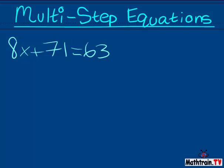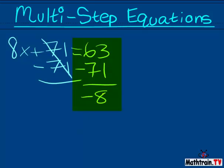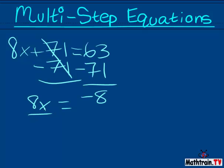First, since we want to get x by itself, we're going to subtract 71 from 71, and that cancels itself out — inverse operations — and then we have to do it on both sides. So, 63 minus 71 equals negative 8, and then we're going to bring down 8x. 8x is equal to negative 8, and then we're going to divide 8x by 8, and that cancels out. Negative 8 divided by 8, and x equals negative 1.